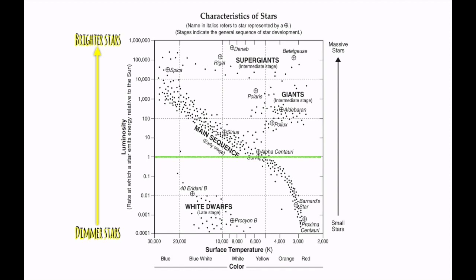So a star like Pollux, or Polaris, or Sirius, they all are brighter than our Sun because they're above that green line. And stars like Barnard Star, or Proxima Centauri, or Procyon B, those are all lower luminosities because they're below this line.